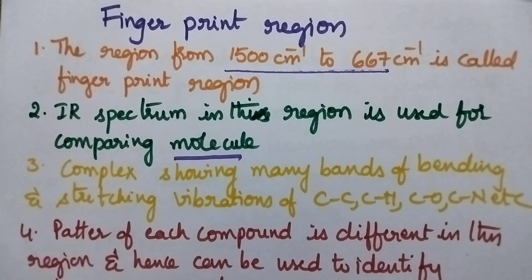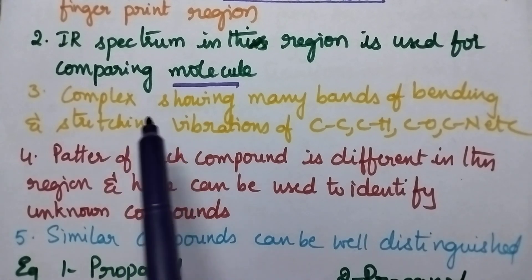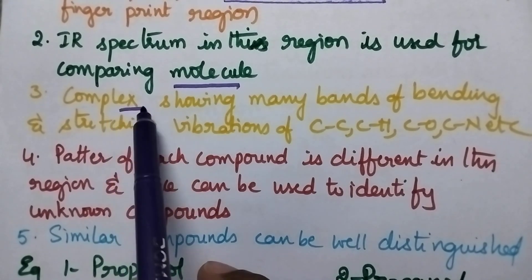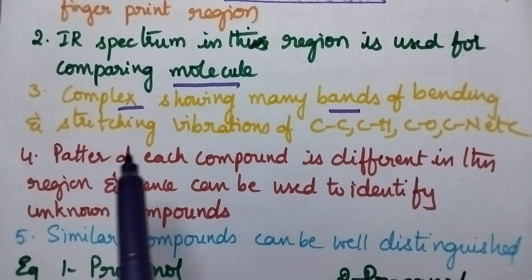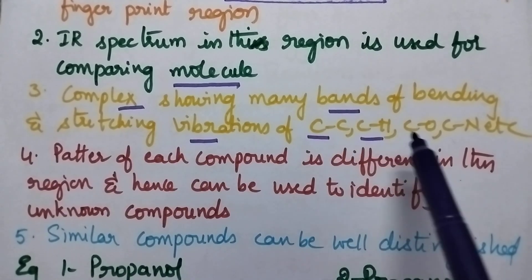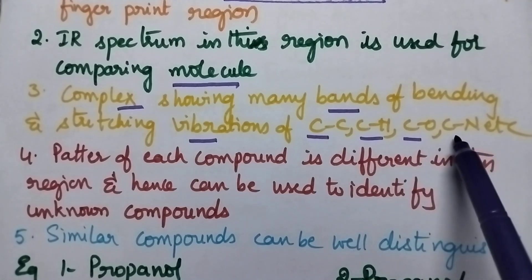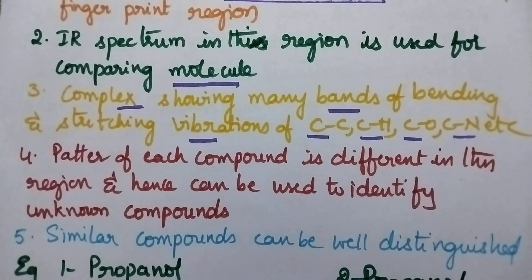At the same time, the graph in this region is complex since it shows many bands of bending and stretching vibrations of C-C single bond, C-H single bond, C-O single bond, and C-N single bond. With the result, the spectrum becomes complex.